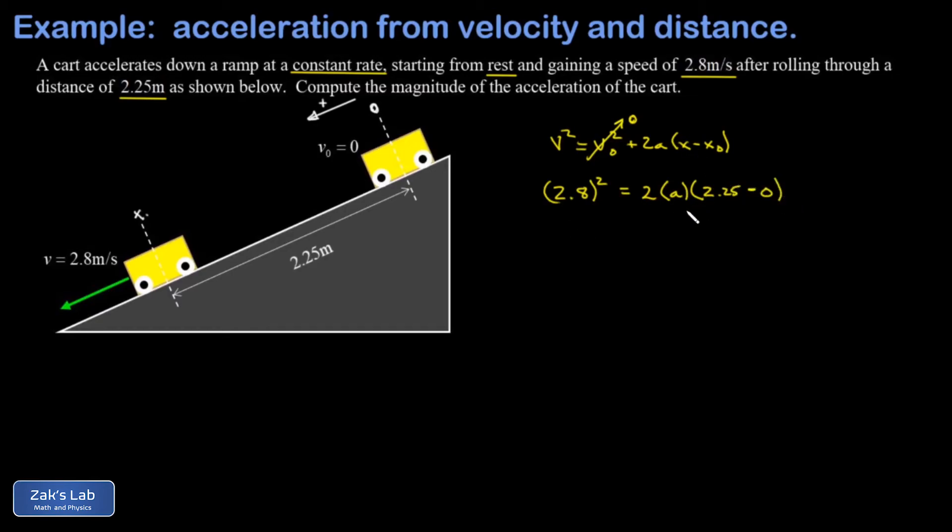So I square 2.8 and then divide by 2 times 2.5, and I've got a to three sig figs.